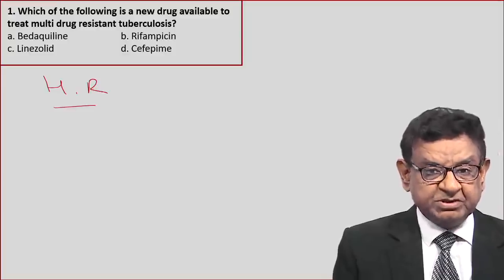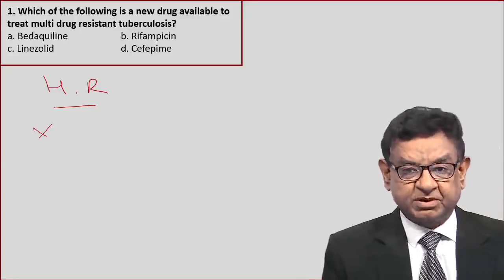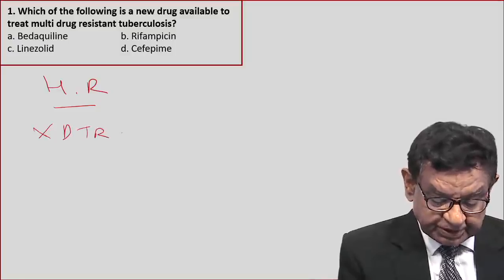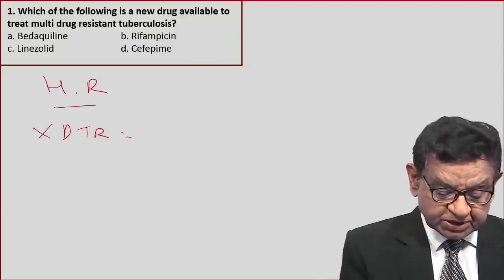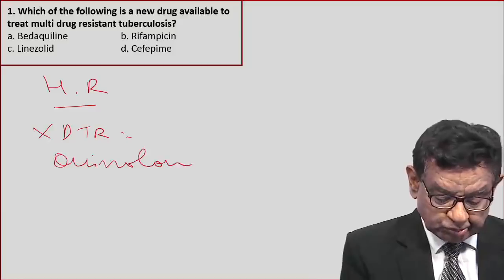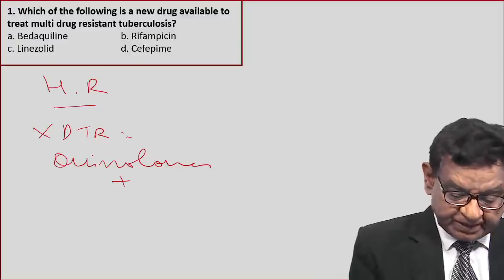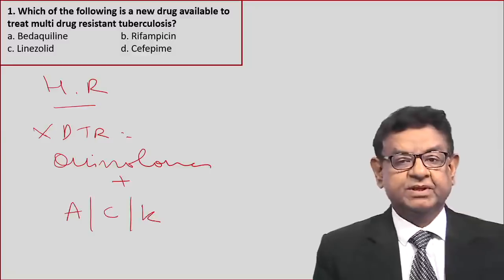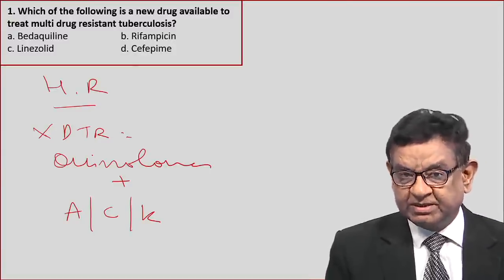There is an extra term — what is extended multidrug resistant tuberculosis, XDRTB? In this, in addition to those two drugs, the patient is also resistant to quinolones, and also to any of the injectable agents: amikacin, capreomycin, or kanamycin. So we need resistance to two additional drug classes for so-called extended multidrug resistant tuberculosis.